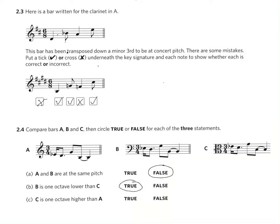In statement C, C is one octave higher than A. Now we've just looked at C and worked out that the E flat shown there is the one just above middle C. The E flat in A is also the one just above middle C, so this statement is false.